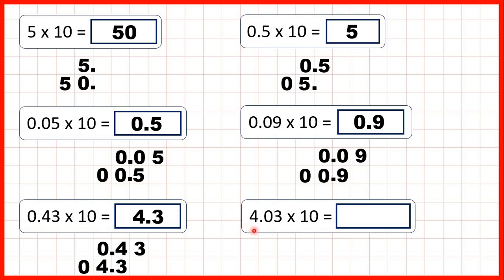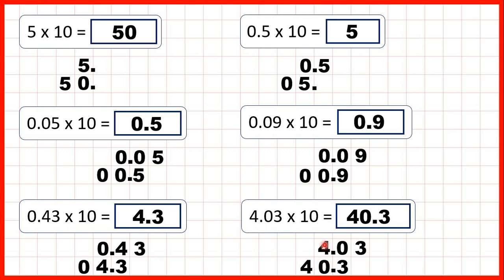Finally, we have 4.03. Again, to multiply by 10, copy down the decimal point and move the digits 1 square across. That gives us 40.3. It's really important that we include this 0, because it's in the middle of our number. If we didn't write this 0, the 4 would still appear to be in our ones column, but we need to show that it's moved to the tens.